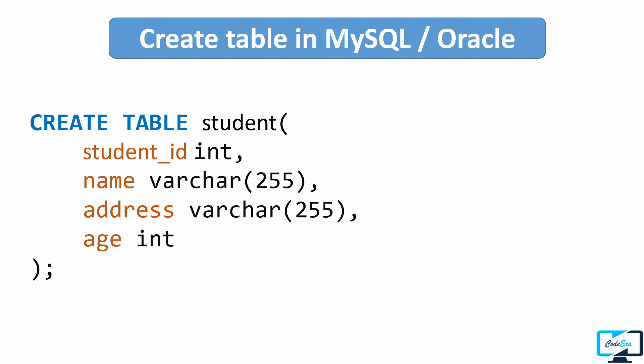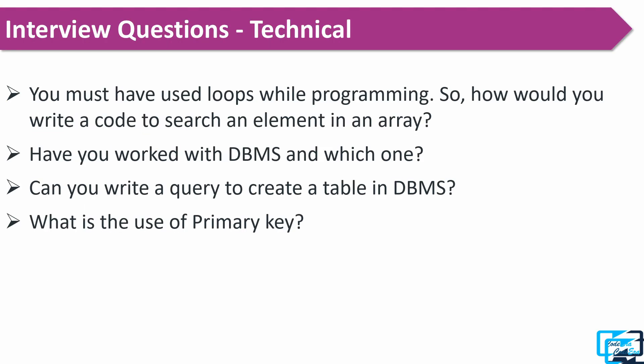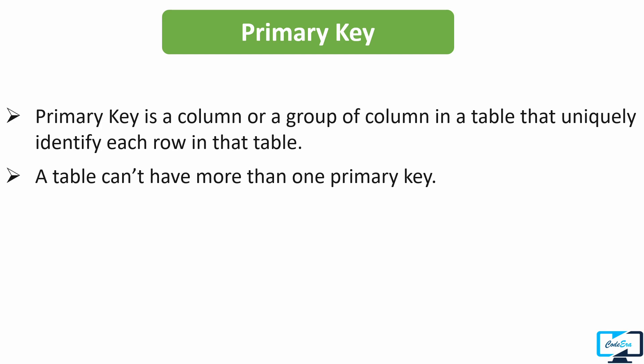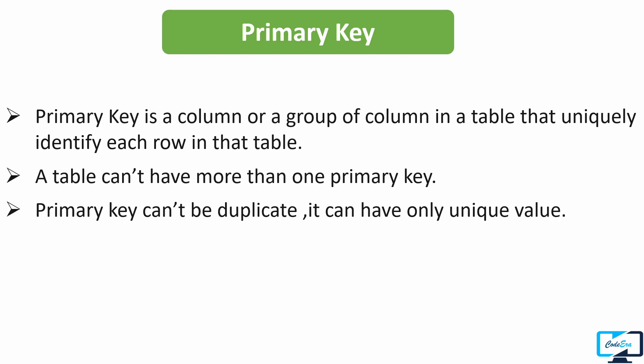The last technical question was what is the use of a primary key. A primary key is a column or group of columns in a table that uniquely identifies each row. A table can't have more than one primary key, and a primary key can't be duplicate — it can have only unique values.